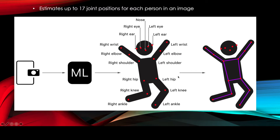The joints also include wrists, elbows, shoulders, hips, knees, and ankles. The way it works is you install this app on your phone, and the app will live-capture video or images. Each frame is run through the PoseNet deep learning model, which identifies those key joints on the human body and connects them using segments.